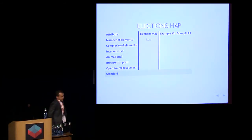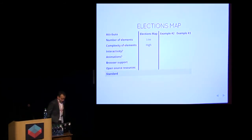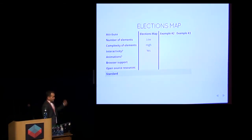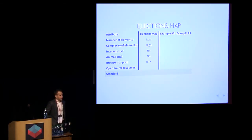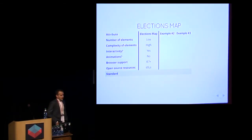For this visualization, we had a low number of elements, the elements were complex — especially the shapes of the states — it's interactive, and you can search to update the UI. There's no animation. We had to support IE7 and IE8, because a lot of our users still use them and they have no SVG support, which is why we added the static image. We used D3 — there are a lot of examples on how to draw interactive maps using D3, which was very helpful.